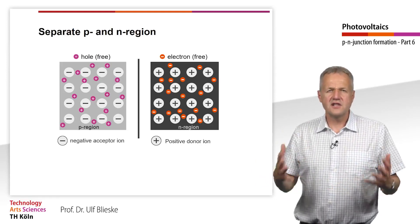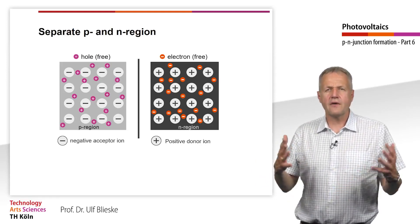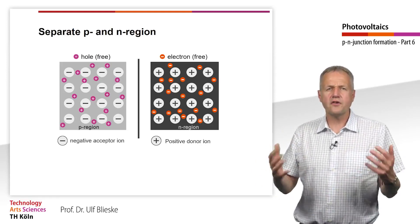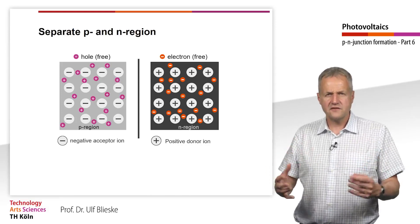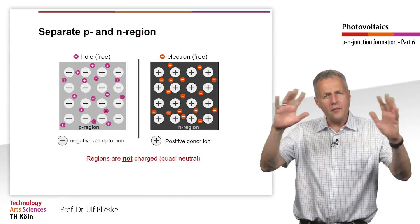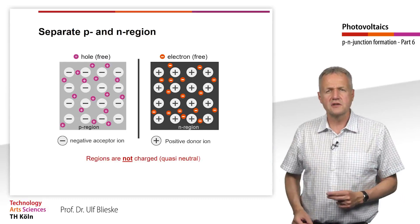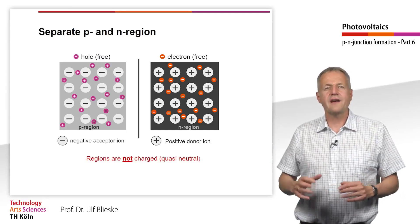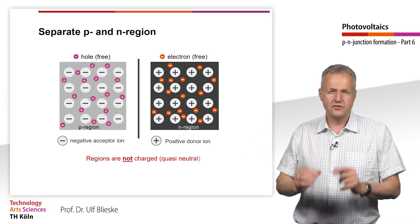In each of the two areas, there are as many positive as negative charges. In sum, the areas are not charged — they are electrically quasi-neutral.